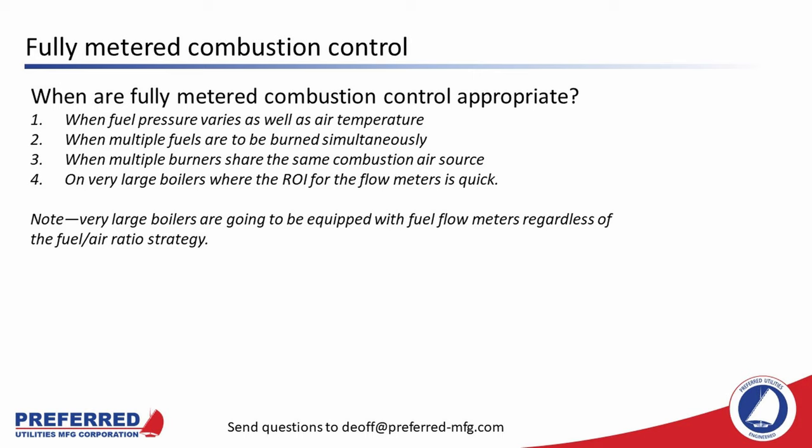Fully metered combustion control is really the only way to do simultaneous fuels safely, and we see it in larger boilers. When multiple burners share the same combustion air source, fully metered controls are usually required — this is how utility boilers are run. Utility boilers might have 36 burners but just one combustion air fan; the fuel is measured at one flow meter at the header and the air measured through the combustion air fan, then the fuel is split to however many of the 36 burners are running. Fully metered controls might also be appropriate on very large boilers where the ROI for the flow meters is quick. Note that very large boilers will have fuel flow meters regardless of the fuel-air ratio strategy, so sometimes there's no extra expense in doing fully metered controls versus parallel positioning with O2 trim.